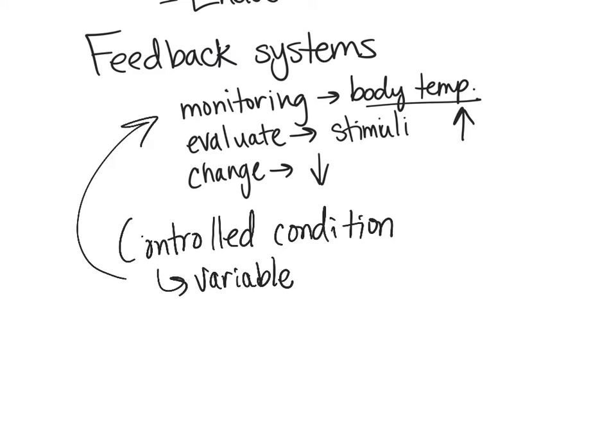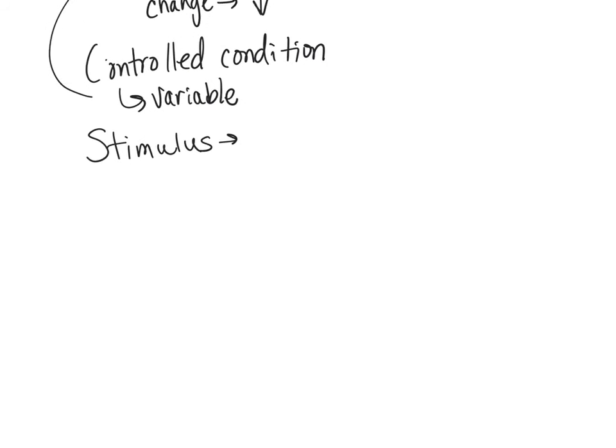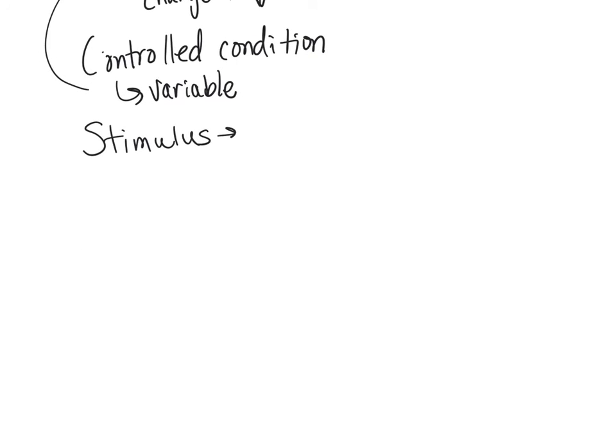Then we have a stimulus, which is any disruption that changes our controlled condition. So our stimulus is what's going to change the controlled condition. The next part of our feedback system, after the controlled condition and stimulus, is the receptor.